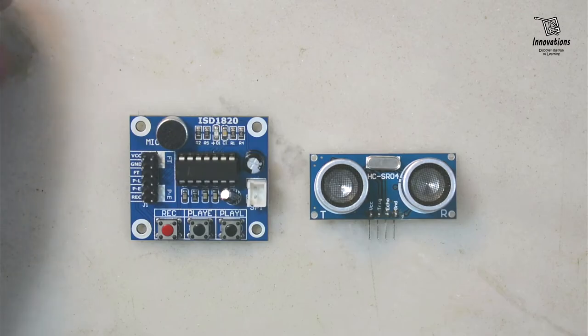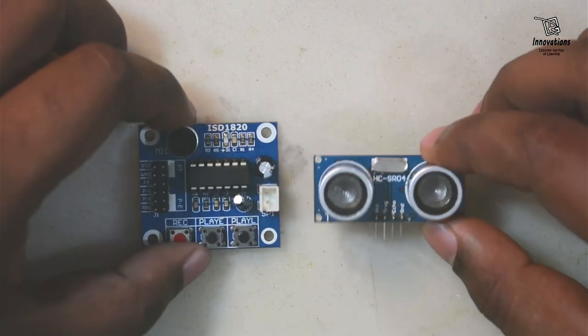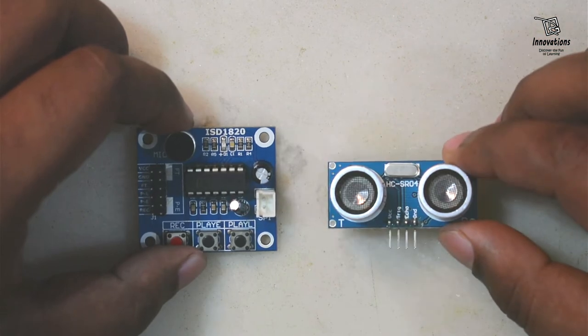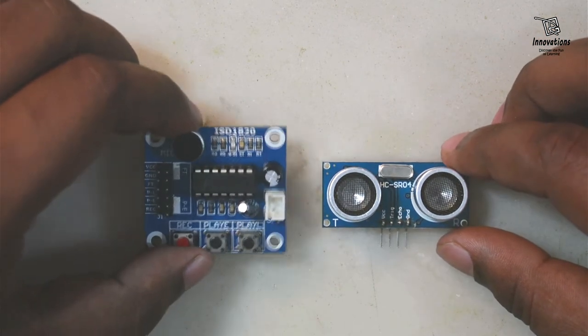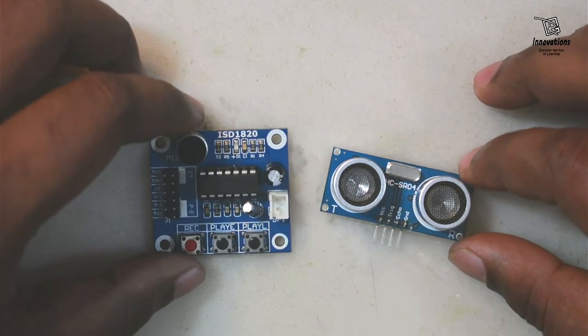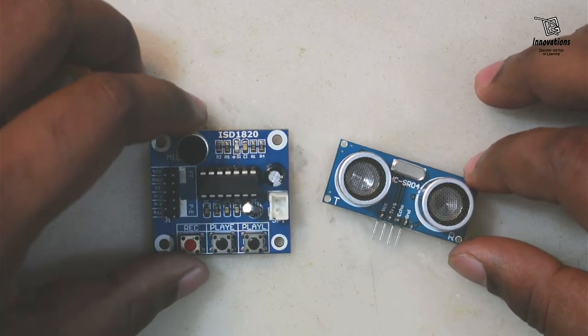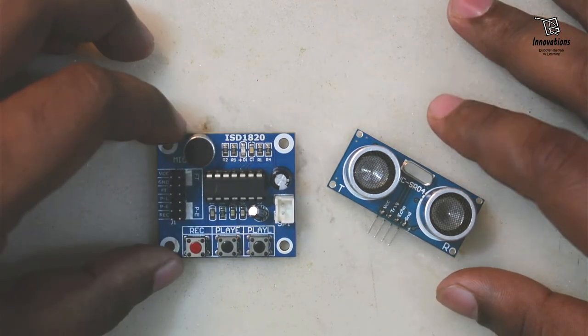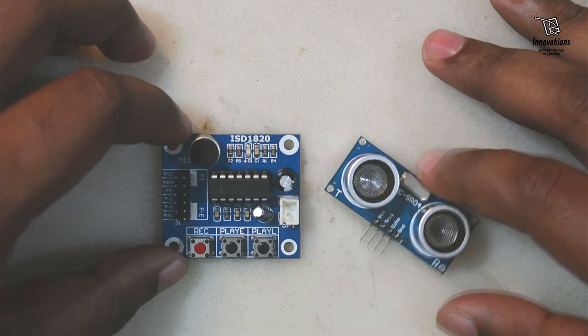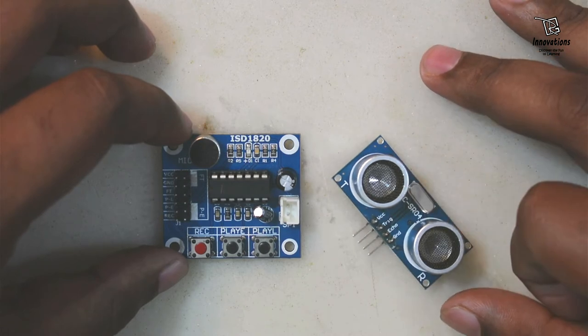In today's video, I am going to show how you can build a project using an HC-SR04 ultrasonic sensor and an ISD1820 voice module. These two modules can be used to build projects like a distance sensor, do not cross line project, predefined height measurement alert, minimum distance alert, or a visitor counter.